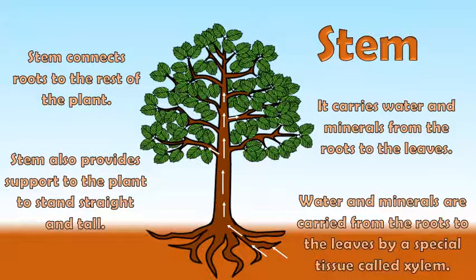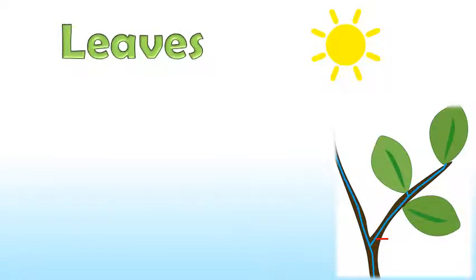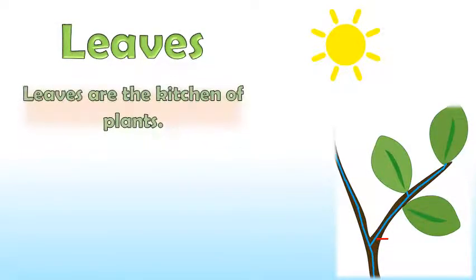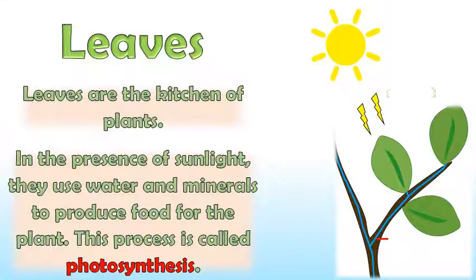The stem also provides support to the plant to stand straight and tall. Leaves are the kitchen of plants. In the presence of sunlight, they use water and minerals to produce food for the plant. This process is called photosynthesis.